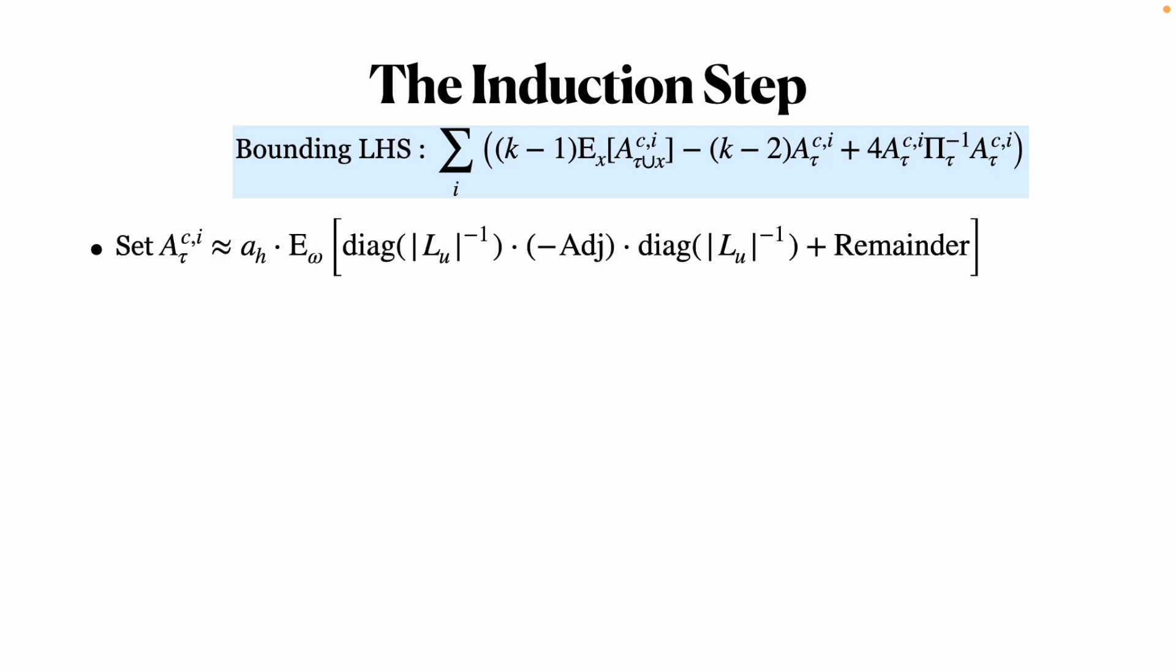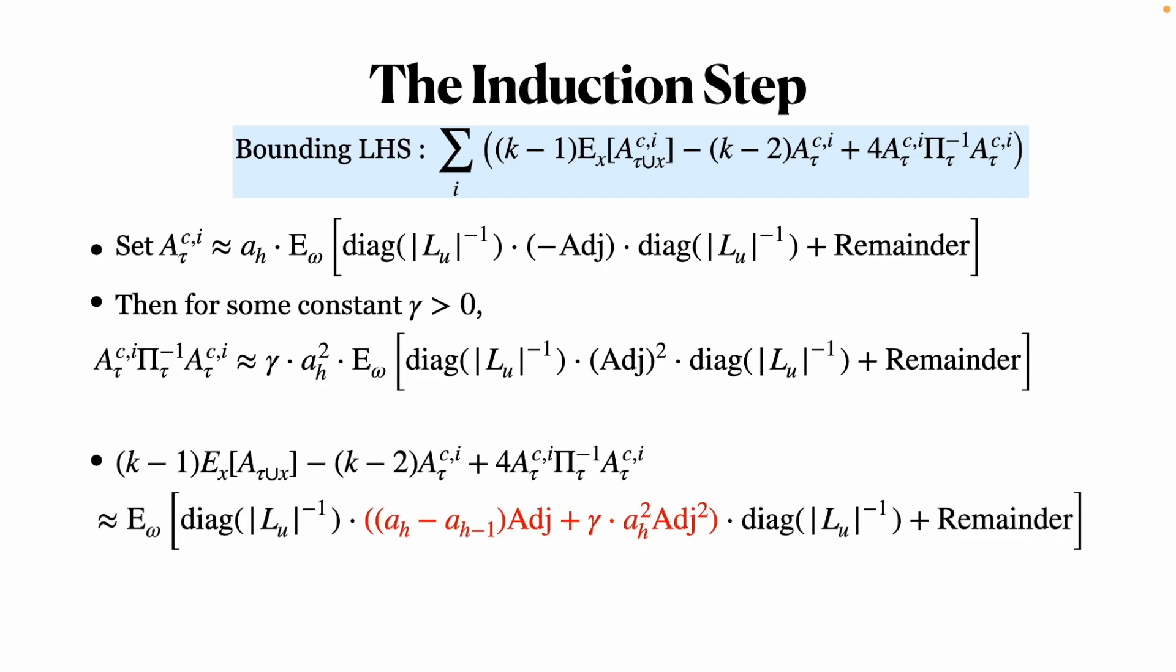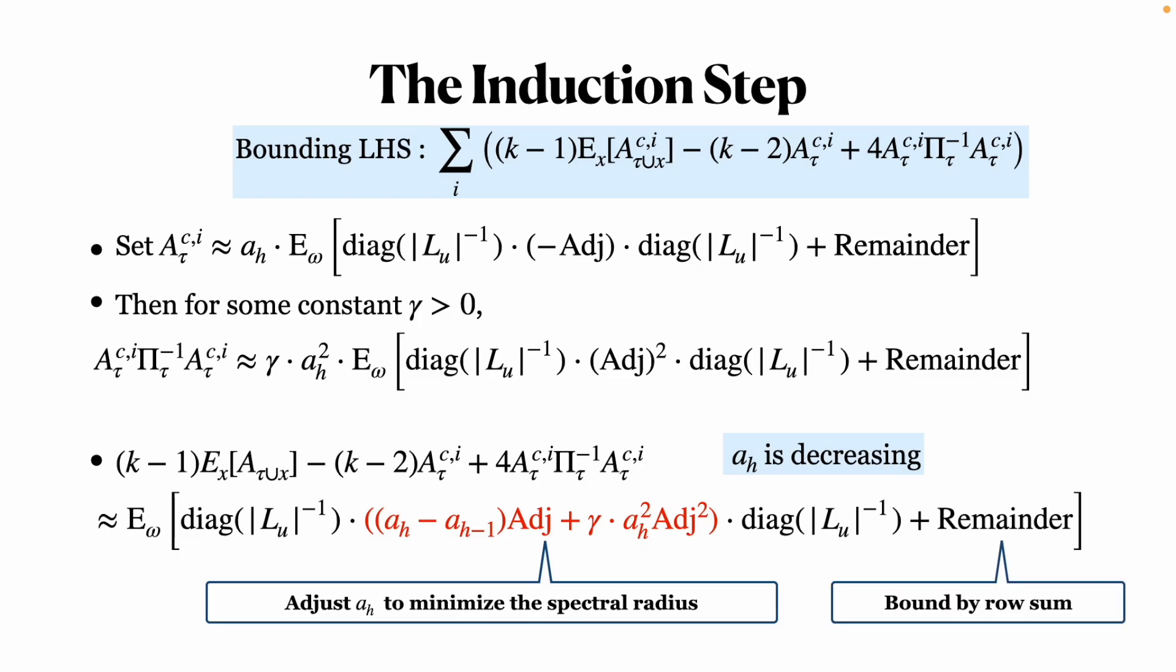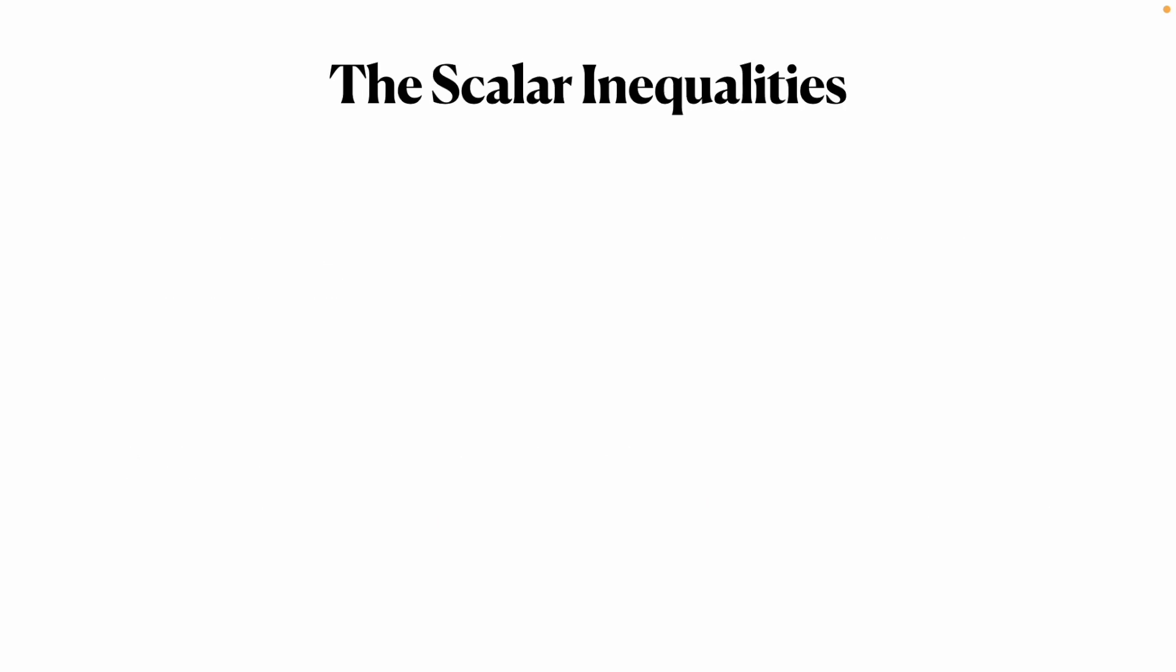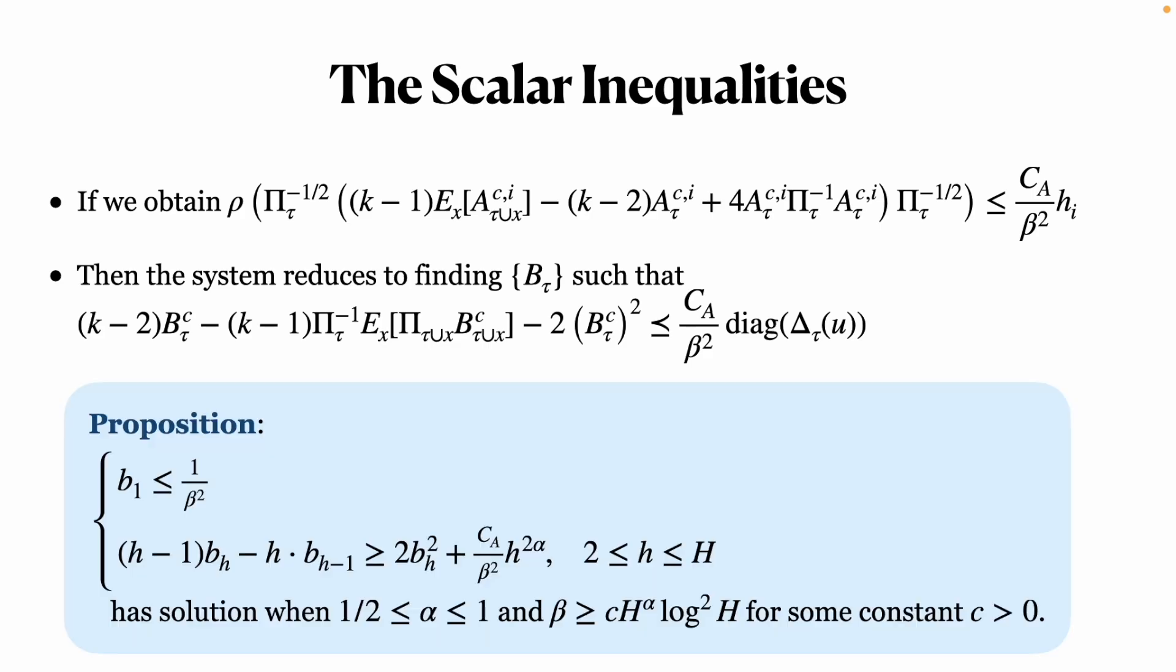Then, we compute the expression of the quadratic term directly, and we write the left-hand side in this form. Now, we just need to adjust the value of αH for any edge to minimize the spectral radius of the red part as a whole. At the same time, we will keep the remainder term as a lower-order term. If we successfully bound the left-hand side with the diagonal matrix, then the system is simplified to a set of scalar inequalities. The solution of the inequalities will act as the entries in B.